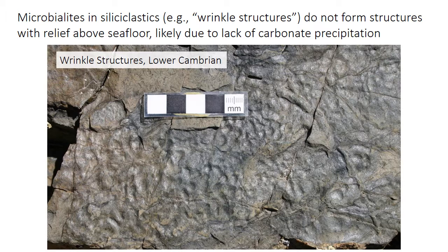All of these microbialites — stromatolites, thrombolites, and wrinkle structures — were very widespread and common, found in many depositional environments during the Precambrian, and to some extent during the Cambrian as well. But following the evolution and expansion of animals in the Cambrian, microbialites became much more restricted, showing up really only in conditions stressful to animals, such as high salinity tidal flats, low-oxygen environments, or lagoons.